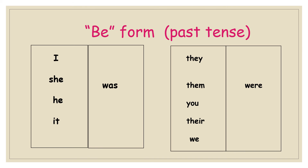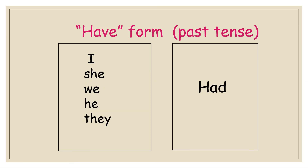To sum up, the 'be' form used in past tense: 'was' is used for singular personal pronouns such as I, she, he, and it; and 'were' is used for plural pronouns such as they, them, you, their, and we. The 'have' form of past tense is 'had,' regardless of any kind of pronoun.